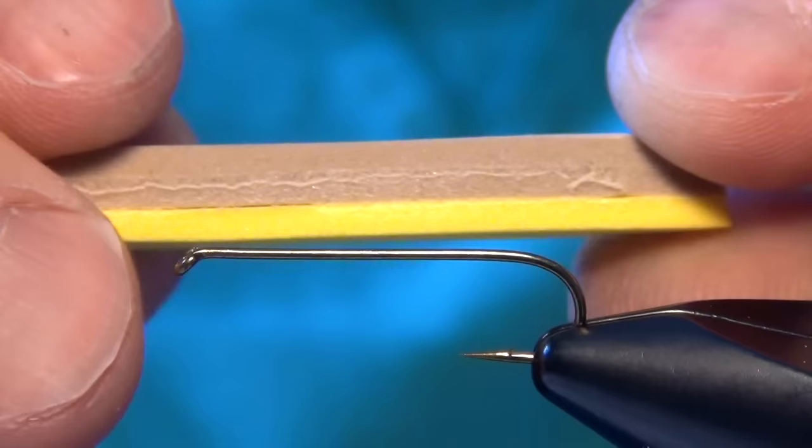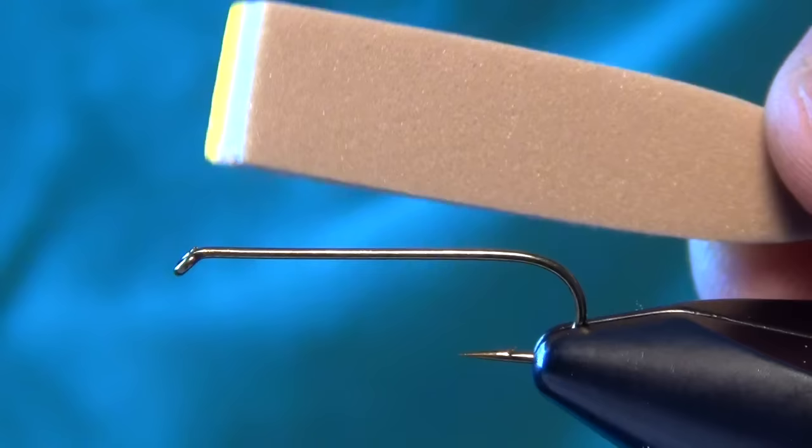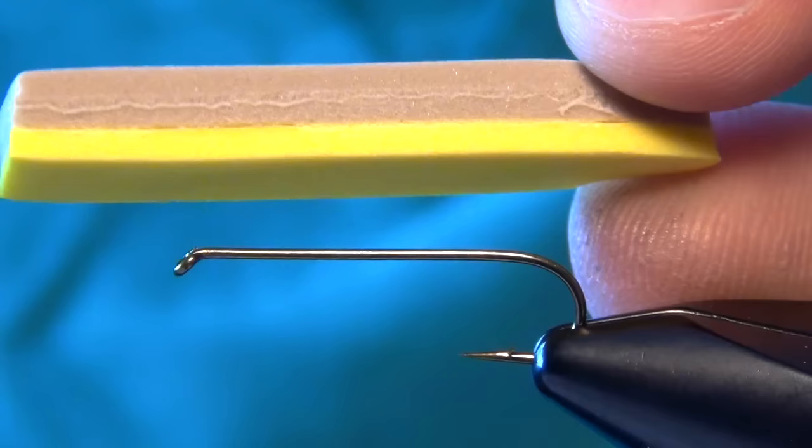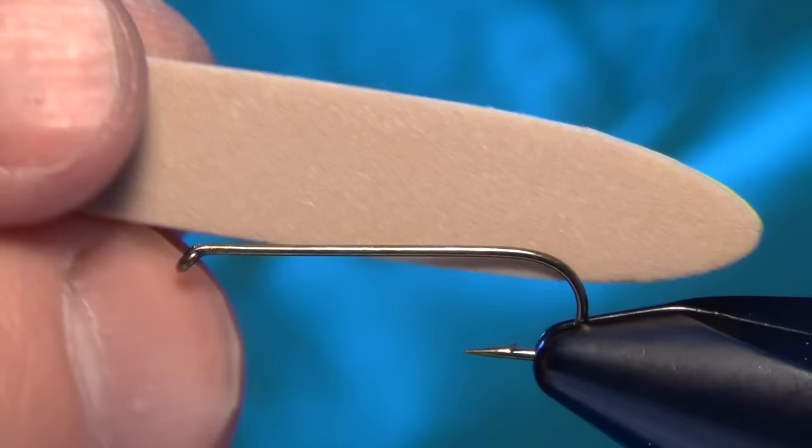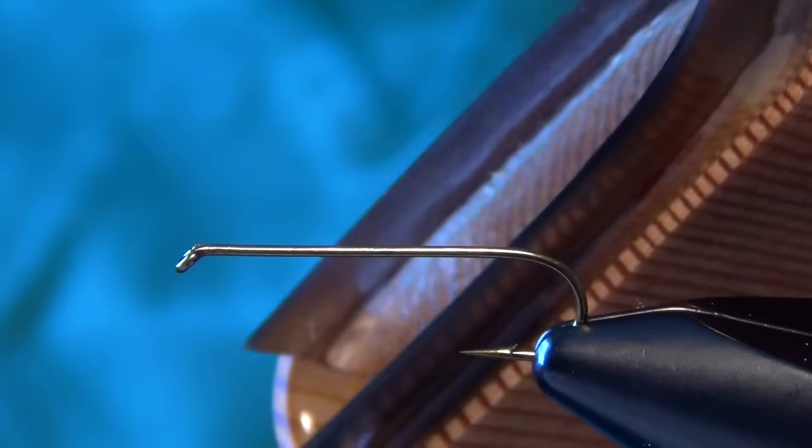The first thing you're going to do is take two pieces of two millimeter tan foam and one piece of yellow foam and use some super glue or zap-a-gap to glue them all together. I like to do one sheet at a time and then put a weight on them and just squish them all together and let them dry.